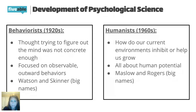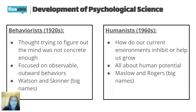The humanist approach focuses on the idea that we can all become the best person we can be. The two names that go with this approach are Maslow and Rogers. A question might pop up on the test about them, but you'll learn much more about them as the year progresses.